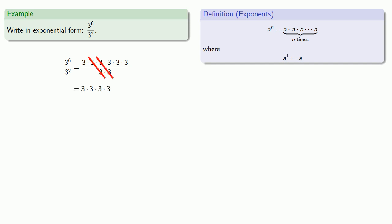We have 4 factors of 3 left over, which we can write in exponential form as 3 to power 4. And this suggests a new rule for working with exponents when I have the quotient a to power m over a to power n. That's a to power m minus n.